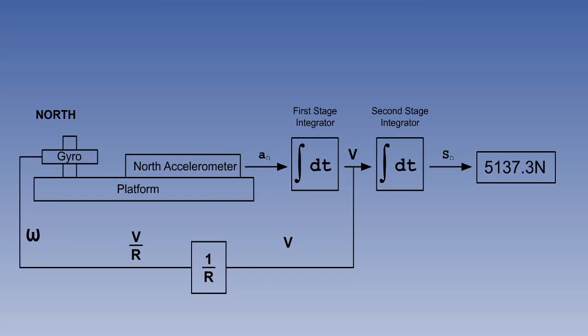This lesson is on inertial navigation system errors. First, we need to remind ourselves how the information flows in the INS in order to work out what the sources of error will be.